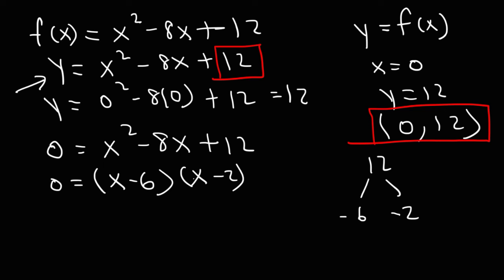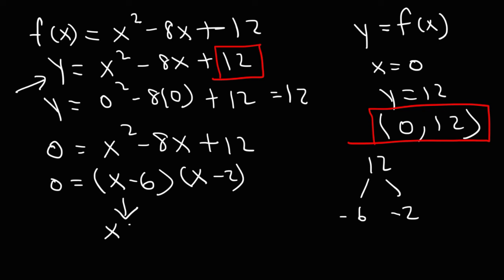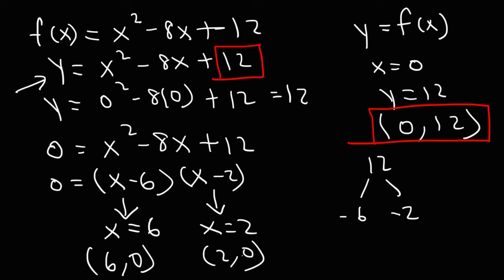Using the zero product property, set x minus 6 equal to 0 to get x equals 6, and set x minus 2 equal to 0 to get x equals 2. So we have two x-intercepts: (6, 0) and (2, 0). That's how you can find the x and y-intercepts of a quadratic equation.